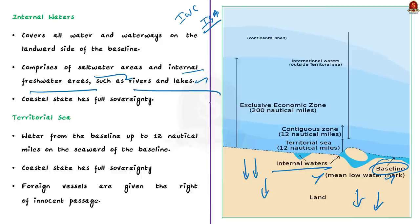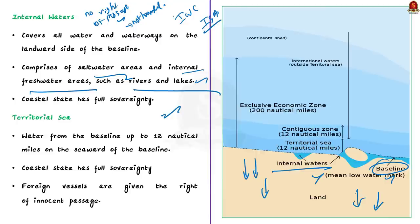In internal waters, the coastal state has full sovereignty. It is therefore free to set laws and regulate the use of any resources. A crucial point to note is that foreign vessels have no right of passage within internal waters — or we can say that the right of innocent passage does not apply in internal waters. The right of innocent passage means any passage that is not harmful to the peace or security of the coastal state, in accordance with UNCLOS and other rules of international law. So fishing, polluting, weapon practice and spying by a foreign ship are not considered innocent.